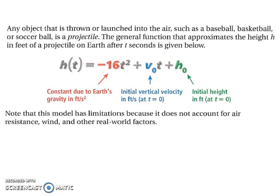So, we have negative 16t squared plus v₀ times t plus h₀ is going to give us what we are looking for. So, our negative 16 relates to the constant due to earth's gravity in feet per second squared. Our v talks about our initial velocity, or vertical velocity in this case, in feet per second. And our h equals our initial height in feet.